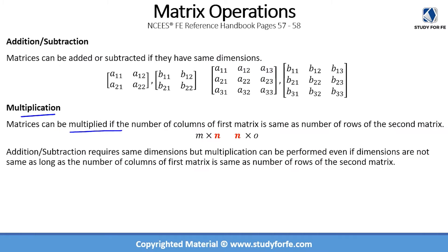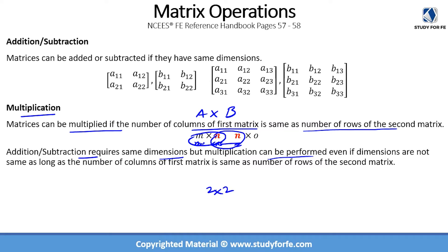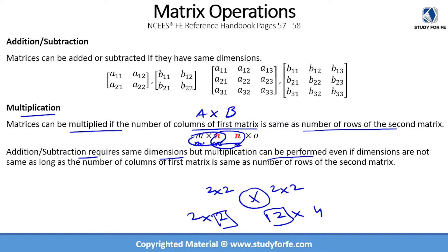For multiplication, matrices can be multiplied if the number of columns of the first matrix is the same as the number of rows of the second matrix. So if the dimension of matrix A is m by n, we need the number of rows in matrix B to equal the number of columns in matrix A. Addition and subtraction require the same dimensions, but multiplication can be performed even if dimensions are not the same — for example, a two by two and a two by four matrix — as long as the columns of the first equal the rows of the second.